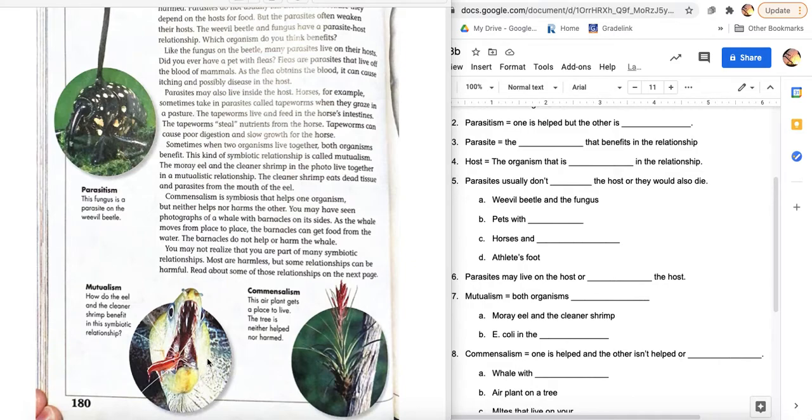The moray eel and the cleaner shrimp in the photo live together in a mutualistic relationship. So when I first look at this picture, I'm like, this scary looking animal is about to eat this thing for lunch. That's not what's happening at all. The cleaner shrimp eats dead tissue and parasites from the mouth of the eel. So they're both benefiting. What is the shrimp getting? The shrimp's getting lunch, as it eats this stuff from the eel. What's the eel getting? The eel is getting rid of dead tissue and parasites in its mouth. So they have mutualism going on here.